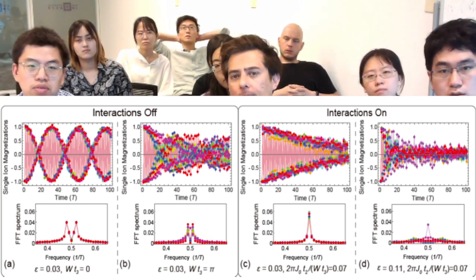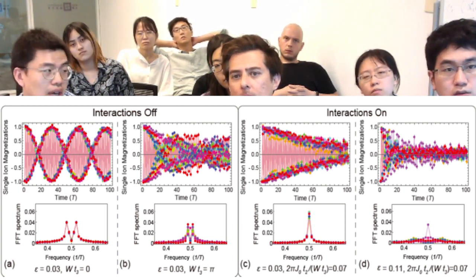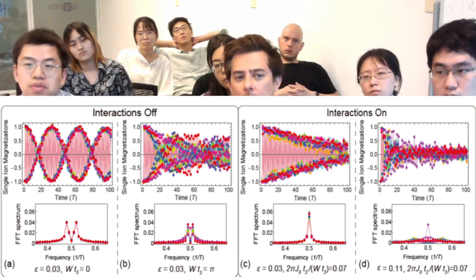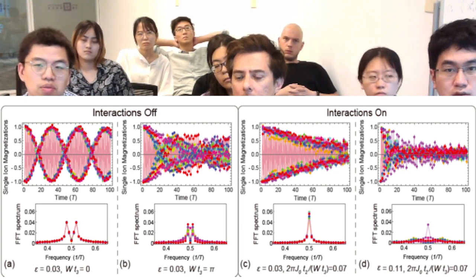This discrete time crystal based on the Ising model, you must have just half of the original frequency. Otherwise, you cannot explain because the theoretic model says so.